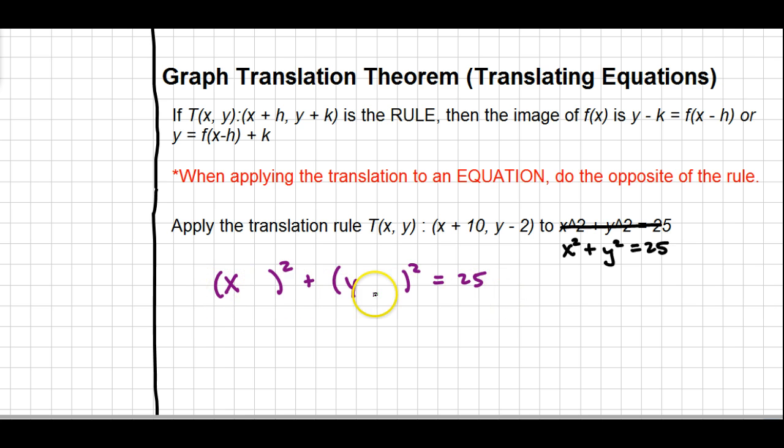So this is going to be my newly transformed equation. And I'm going to just apply the rule oppositely to it. In the rule, I'm adding 10. So in the equation, I'm going to take away 10. In the rule, I'm taking away 2. So in the equation, I'm going to add 2. The reason for this is simply that the graph wants to get back to what it was originally. If we took this rule right now and plugged it into our new equation, the 10 minus the 10 would get us back to 0. And the negative 2 plus the 2 would get us back to 0 there as well. So we apply it oppositely to equations so that when we put the rule in again, it will go back to what it was.